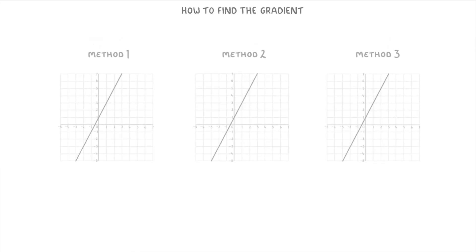One where we find out how much the line has risen by for each one that it goes across. A second that uses the rise over run equation and a third that uses the change in y over change in x equation. Although as we'll see these second two methods are basically the same thing.